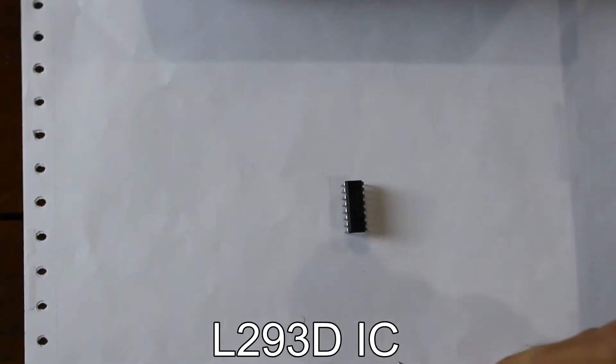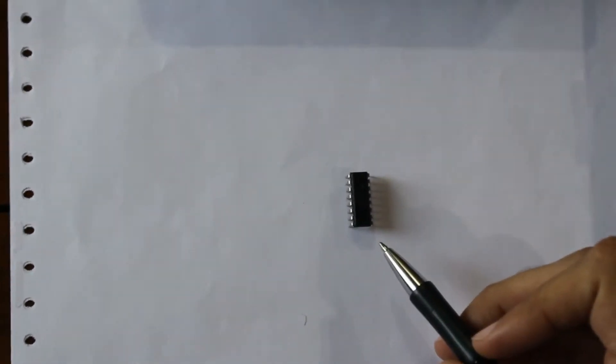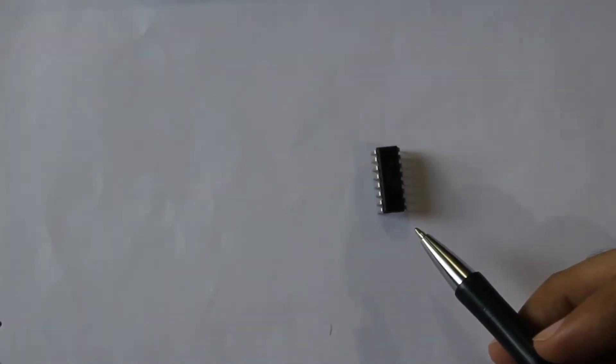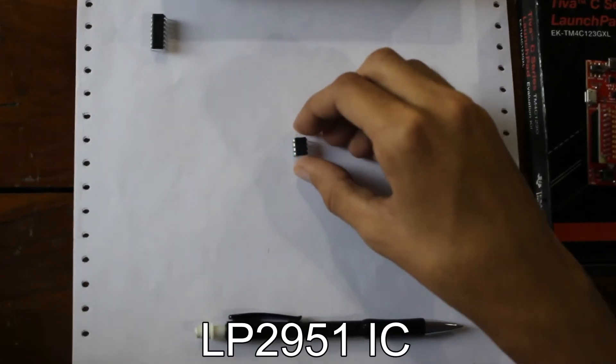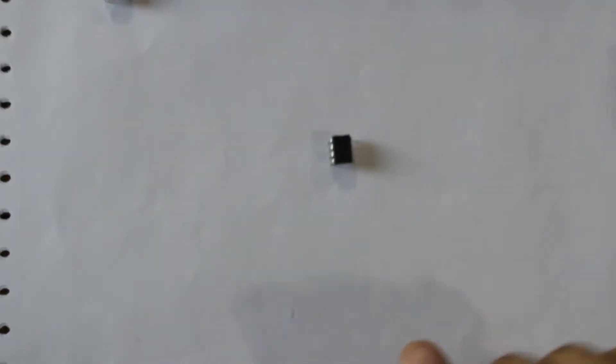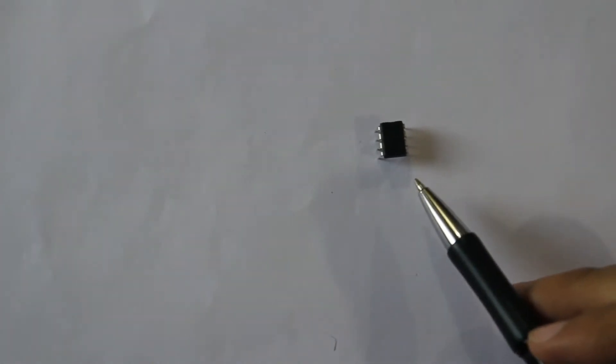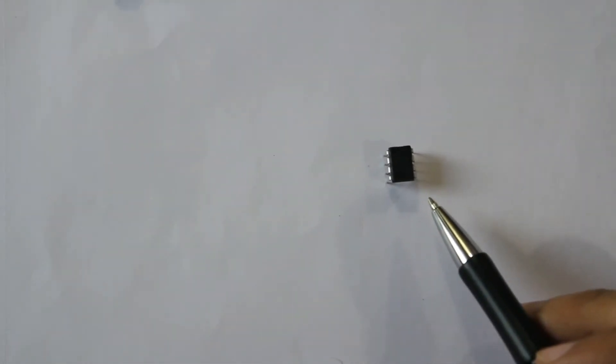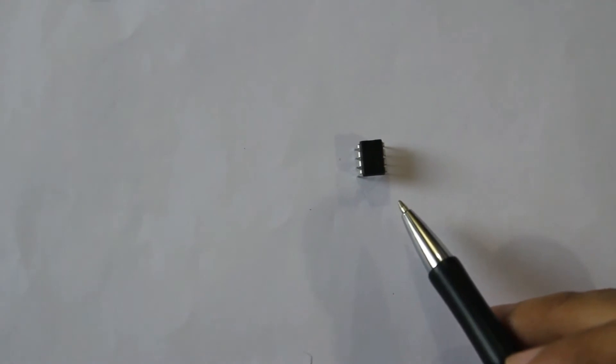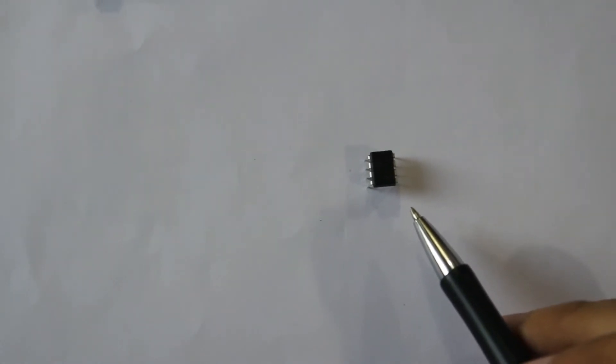This is L293D IC. It is a dual H-bridge IC used to drive the DC motors. This is LP2951 IC. It is a linear voltage regulator, single output LDO. LDO stands for Low Dropout Regulator. We used it to step down the voltage from 12V to 3.3V.